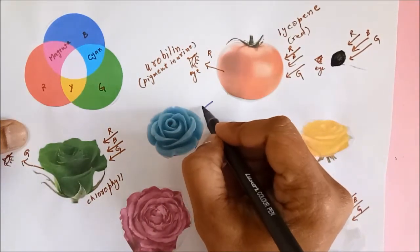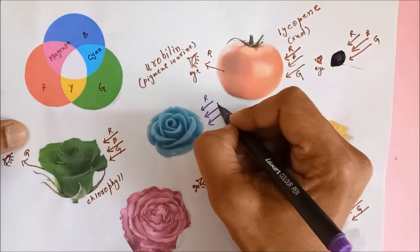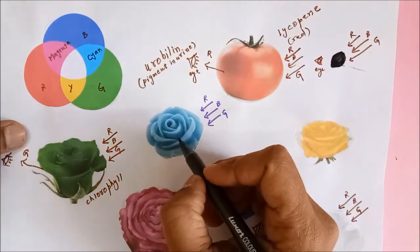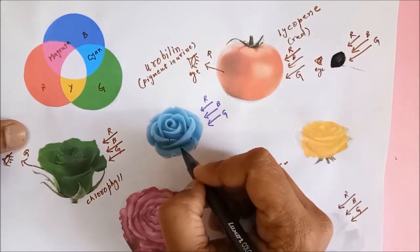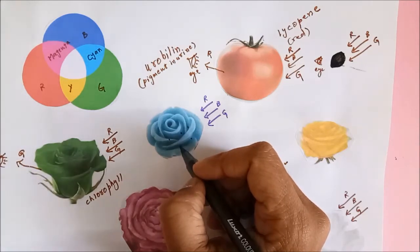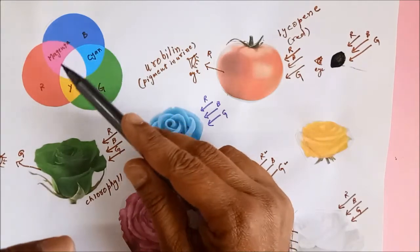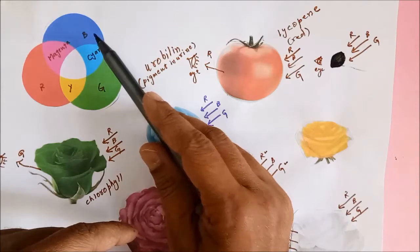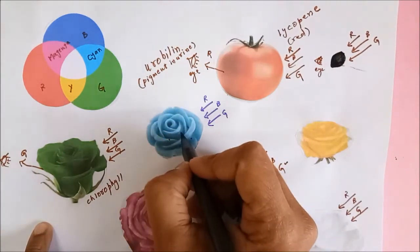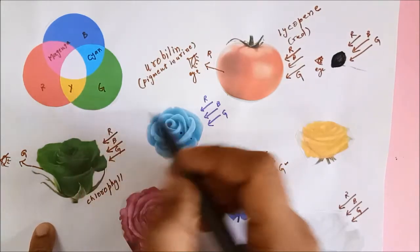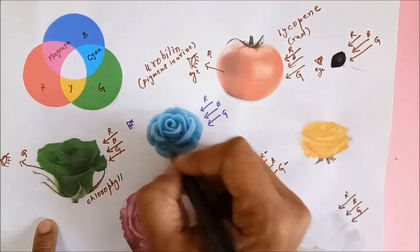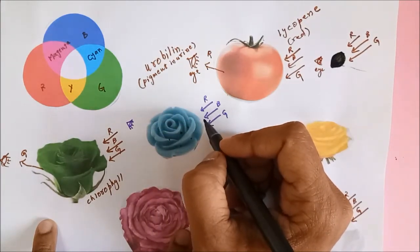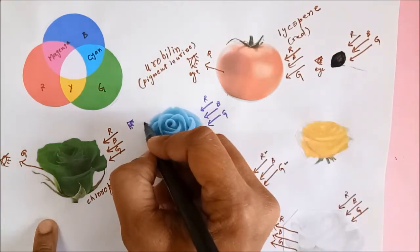Let us consider we have white light coming in. White light is made up of red, blue, and green primary colors. Now this cyan color, or the cyan rose, is made up of some pigments. These pigments are small particles that absorb only selective colors. If you look at this particular color wheel, you will see that cyan is made up of blue and green. So what happens is these pigments absorb red color. When the cyan rose pigments absorb red color, the red does not reach your eye. So which two colors are not getting absorbed? The answer is blue and green.